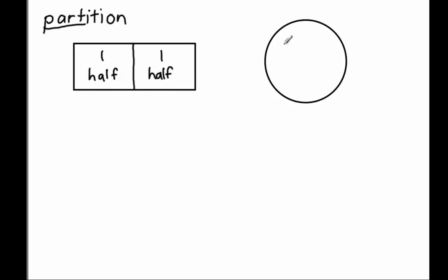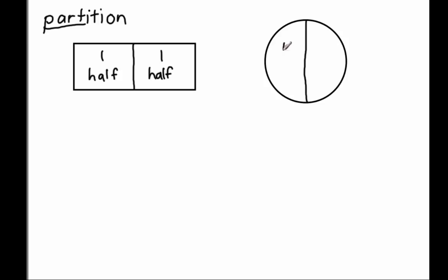Let's break this circle into two equal shares — let's partition it into two equal shares. The circle is the whole. If we partition right down the center, we can see that we now have two shares: one share here and another share here. Because they are two equal shares, one of what it takes two of to make a whole, we can call each one a half. So this is one half here, and this is one half here.